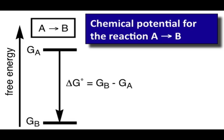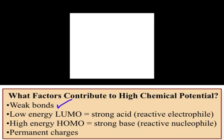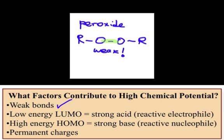There are four factors that contribute to high chemical potential, one of which is going to be a weak bond. So perhaps a peroxide bond, two oxygens bound to one another, or perhaps a halogen, two bromines or two chlorines, two fluorines. The bonds previously mentioned are weak, and weak bonds tend to be easily broken because they have low-lying LUMOs in their sigma star.